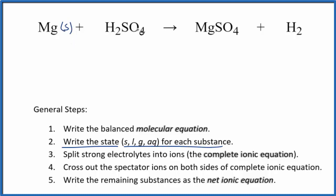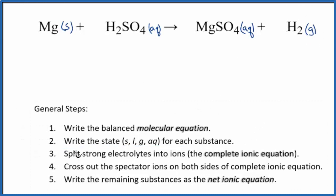Magnesium is a metal so it's a solid. Sulfuric acid is a strong acid, a strong electrolyte, so that's going to be aqueous. It will dissolve and dissociate into its ions. Magnesium sulfate compounds are generally very soluble so we're going to write aqueous because that will also dissociate into ions. Hydrogen is a gas.